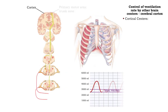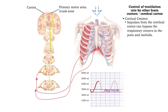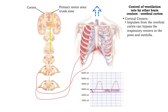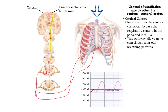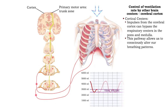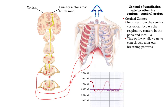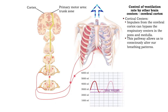Impulses from higher cortical brain centers can bypass the respiratory centers in the pons and medulla, and provide us with some limited voluntary control over the muscles of ventilation. This pathway allows us to consciously alter our breathing patterns, which is necessary for speech or holding our breath.